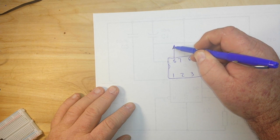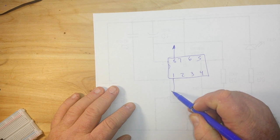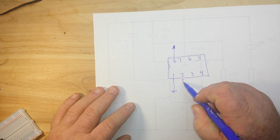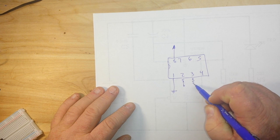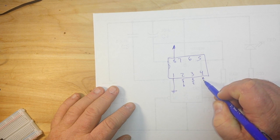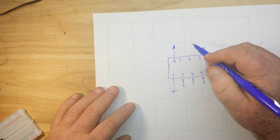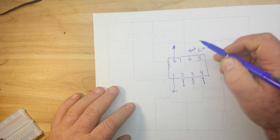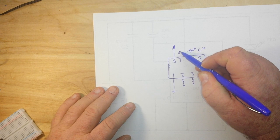8 is VCC. 1 is ground. 2 is our trigger. 3 is our output. 4 is reset. 5 is control voltage. 6 is threshold. 7 is called discharge.